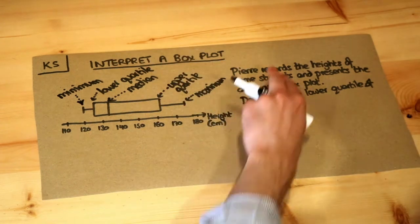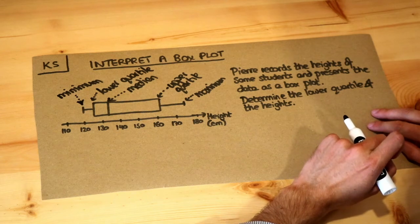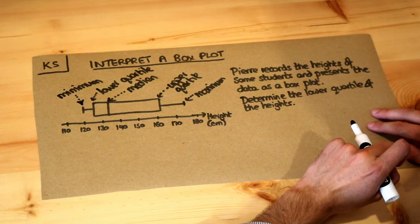Now if we read the question first and then see why this might be useful: Pierre records the heights of some students and presents the data as a box plot. Determine the lower quartile of the heights.